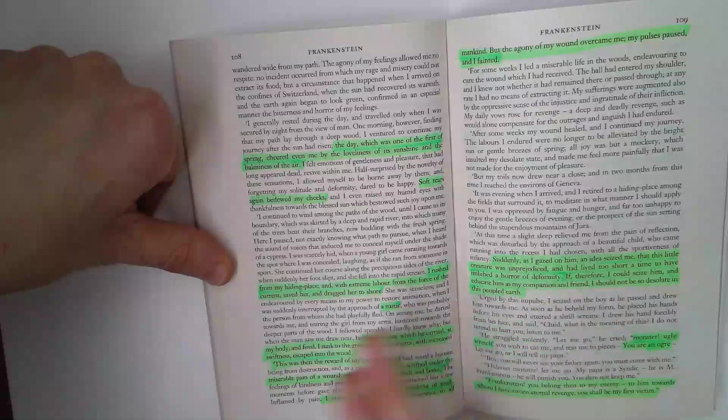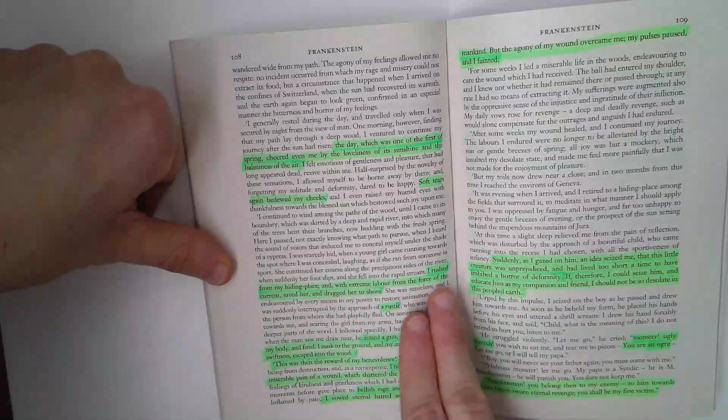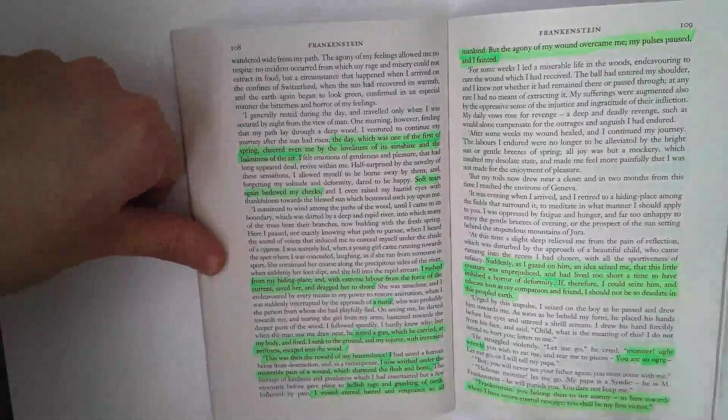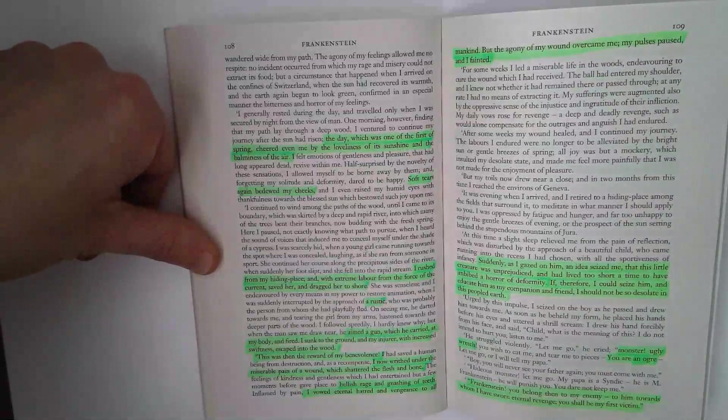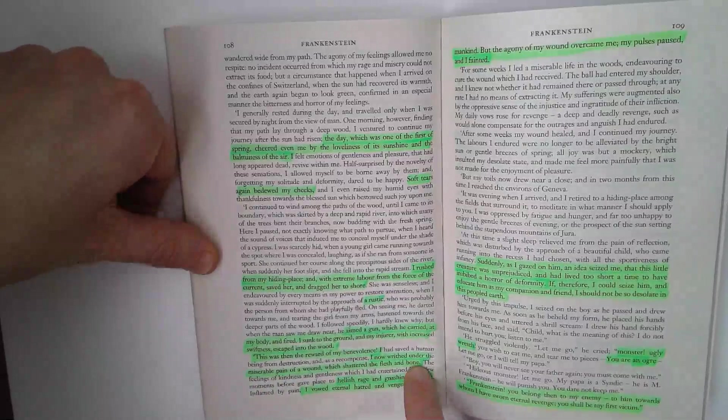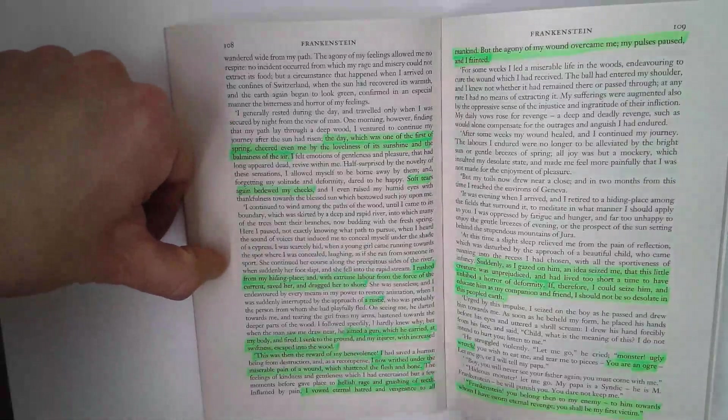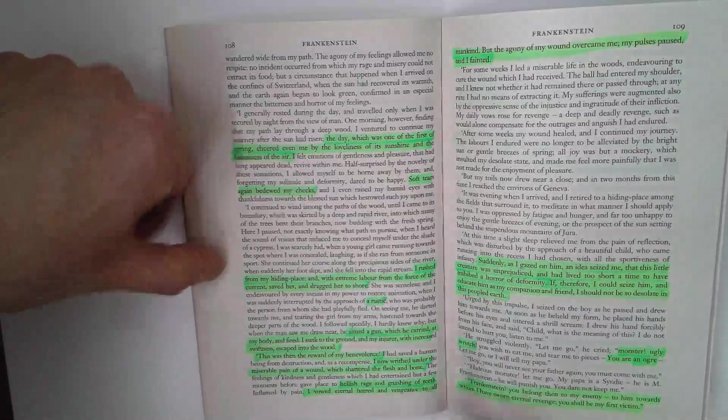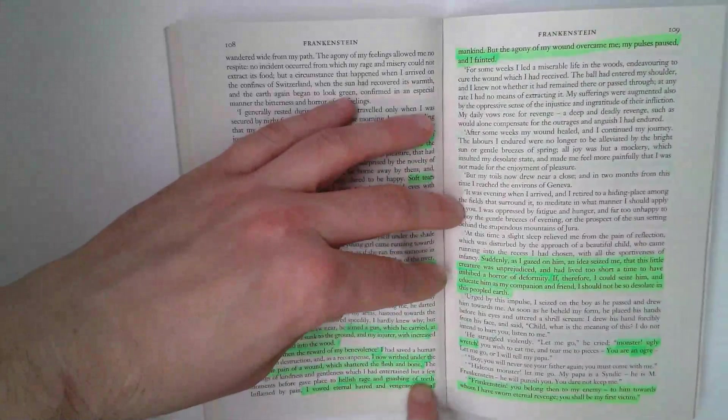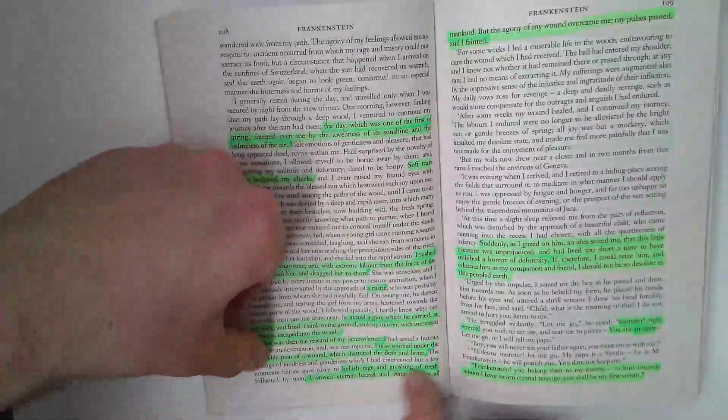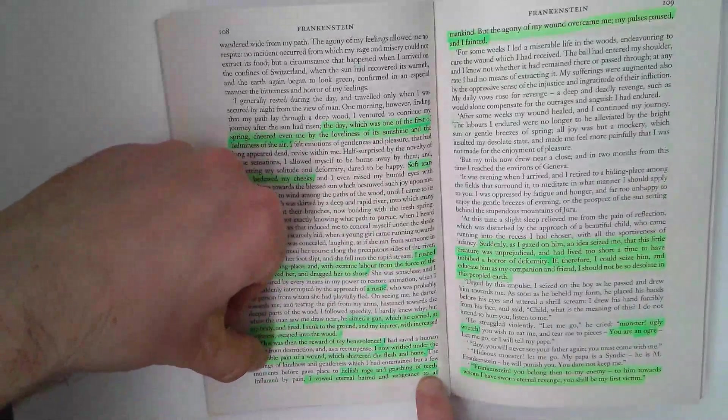Of course, there's the episode with the rustics where the creature rescues the woman from the river, drags her to shore, and is shot for his troubles. Another example of mankind interacting with the creature to cause him pain. Writhing of the miserable pain of a wound which shattered the flesh and bones. So not only is it physical pain now, it's the emotional pain of another rejection by mankind. Interesting, continuing the satanic imagery we've seen of the forked tongues. The creature has now a hellish rage and gnashing of teeth. We've seen Victor gnashing his teeth. We've seen that referenced in the Bible of course. But a hellish rage.